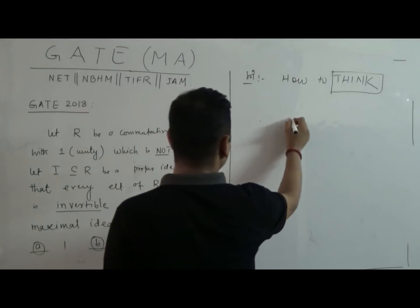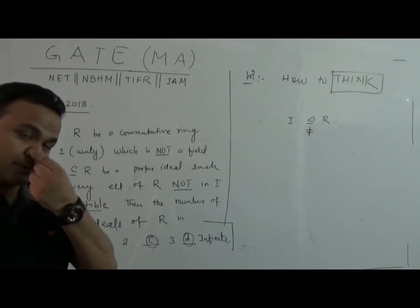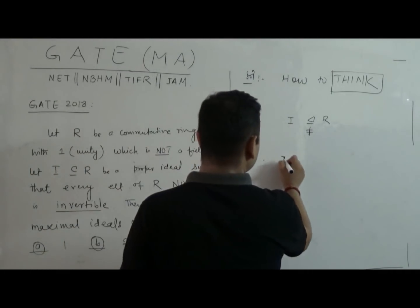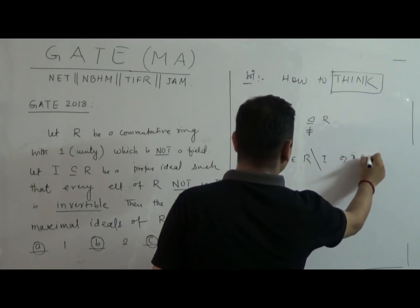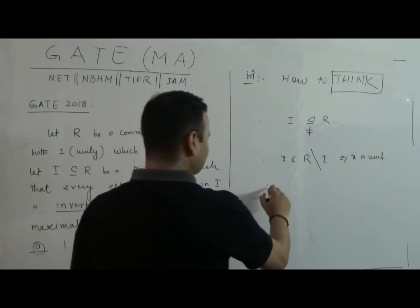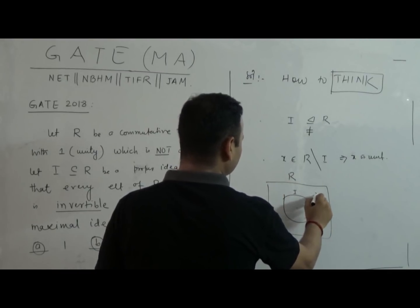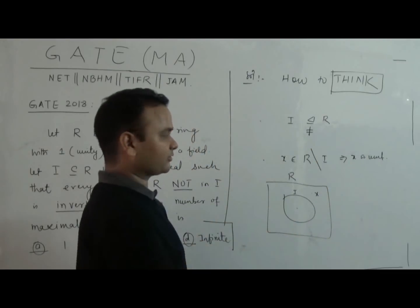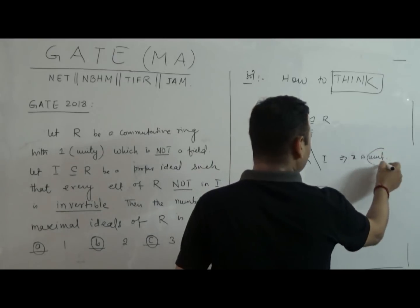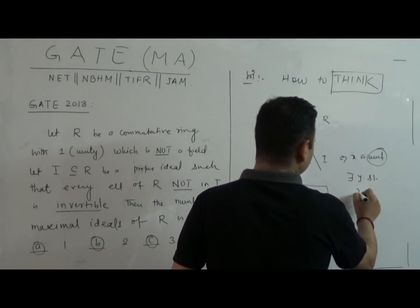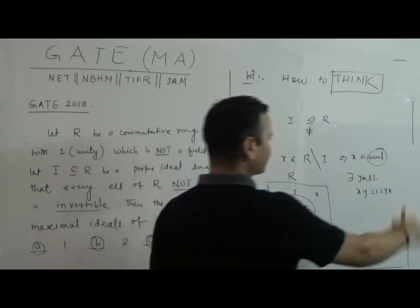What is the question? We are given an ideal I of R, which is proper (not equal to R), with the condition that if x belongs to R but not to I, then x is a unit. So you have a ring R with an ideal I, and every element outside I is a unit. A unit element x has an inverse y such that xy = 1 = yx, and y is not equal to 0.